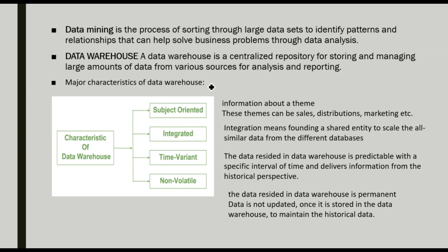We will cover tools and how to create a data warehouse throughout the subject. First, we are going to talk about theory-based questions. The major characteristics of a data warehouse — data warehouse is a bigger term compared to a relational database. The main four characteristics are: subject-oriented, integrated, time-variant, and non-volatile.